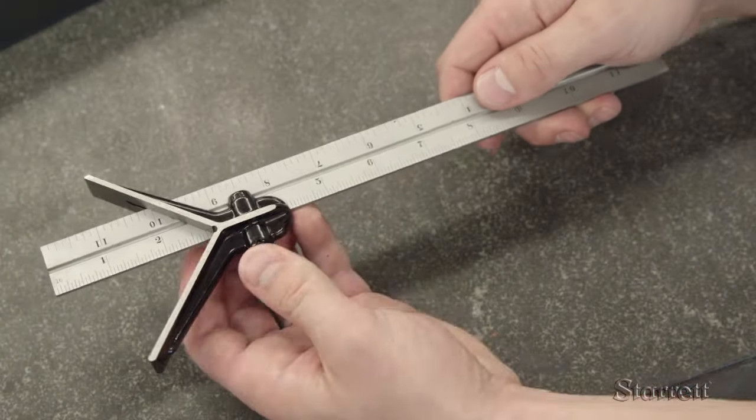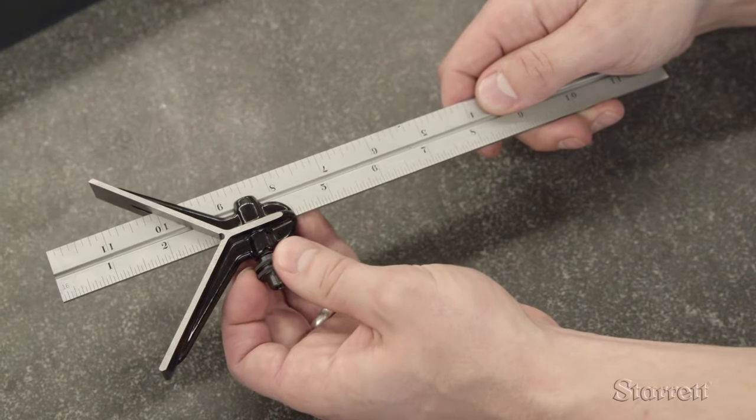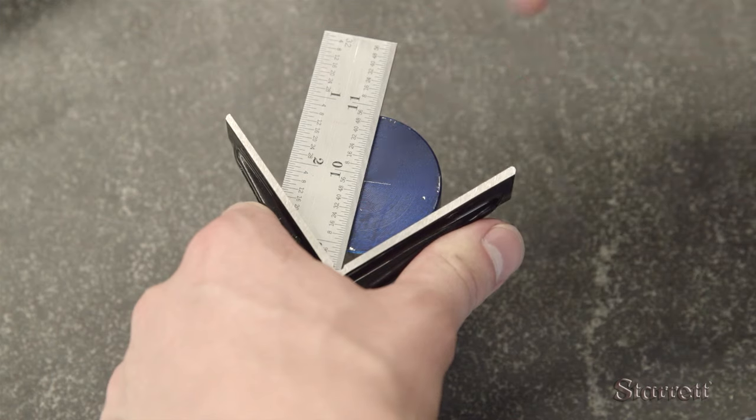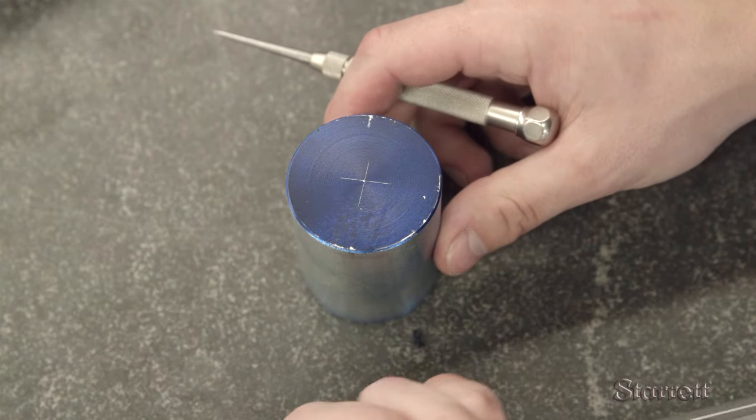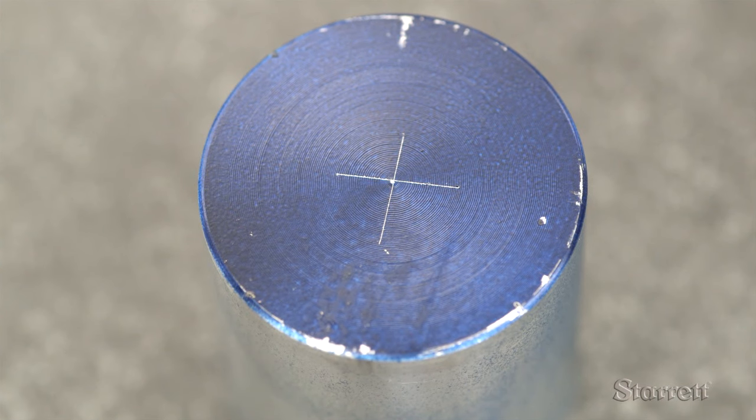Now let's switch to the center head. This is the tool you need to find the center of a piece of round stock, useful for preparing a workpiece for a cylindrical grinder or lathe tailstock.